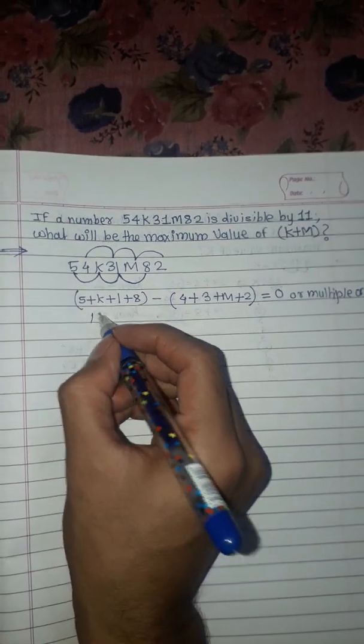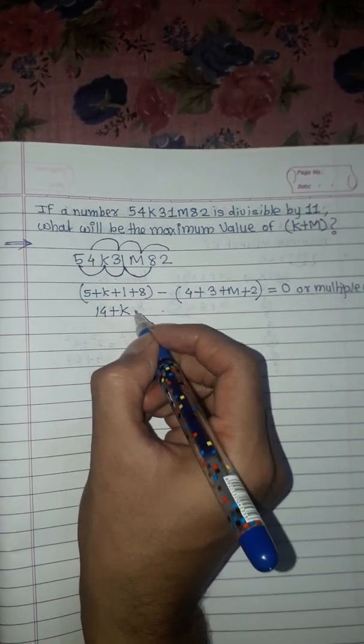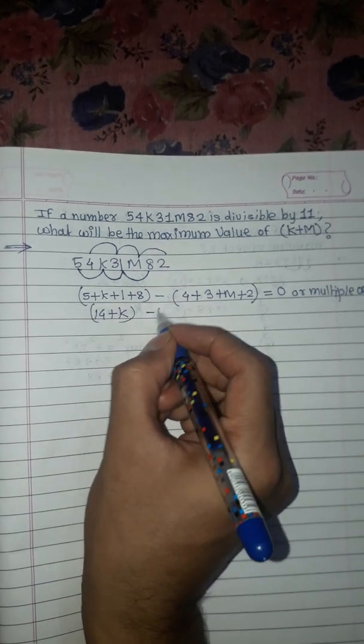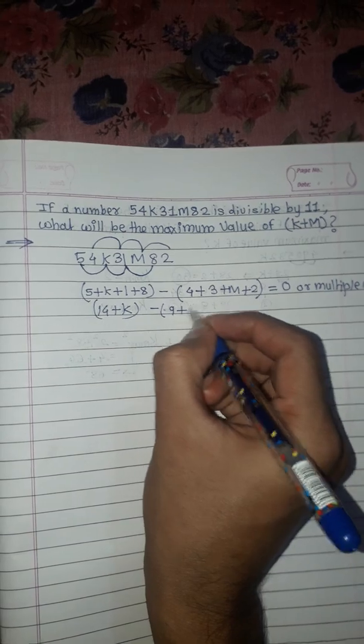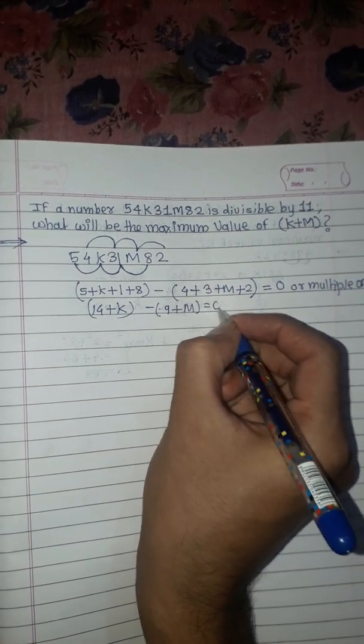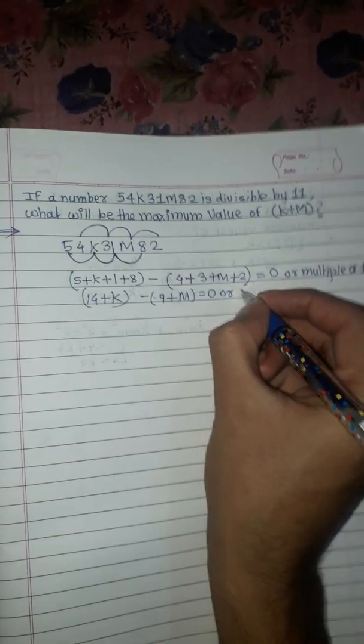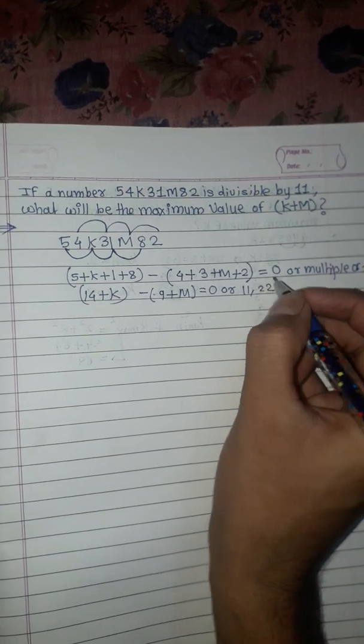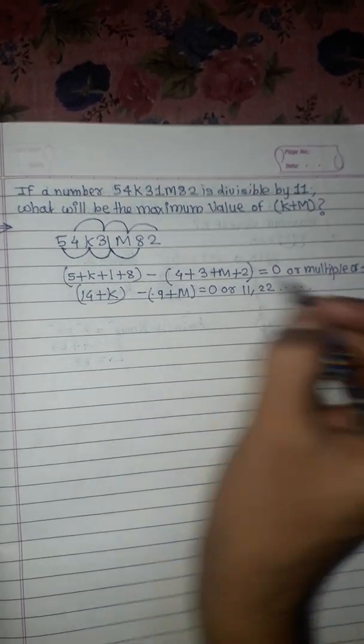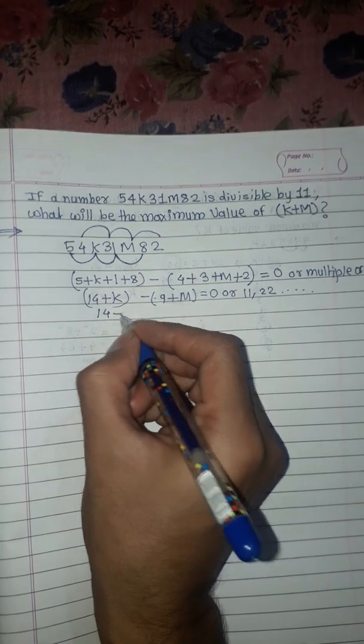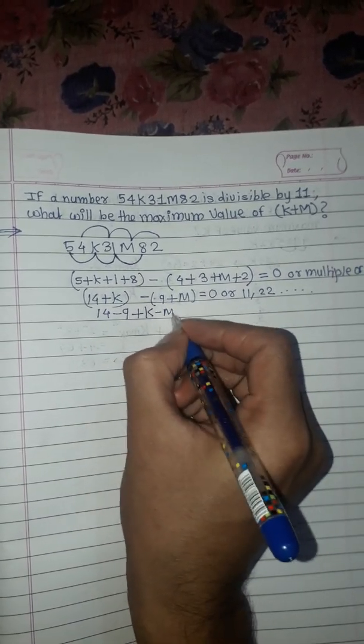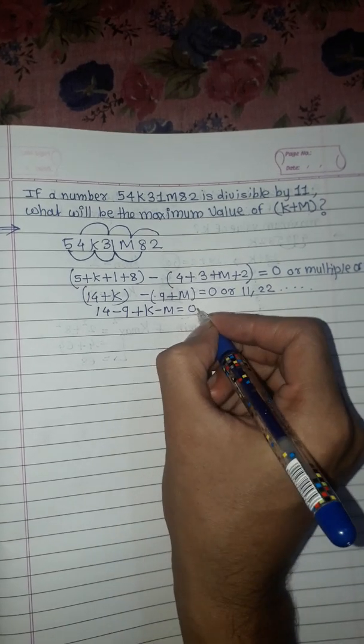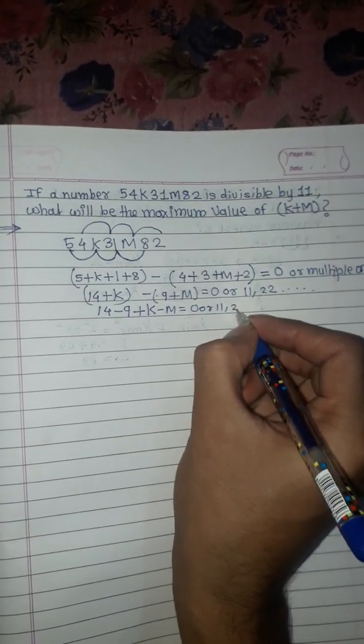This gives us 14 - 9 + k - m = 0 or 11, 22. Simplifying: 14 - 9 = 5, so 5 + k - m = 0, which means k - m = -5.